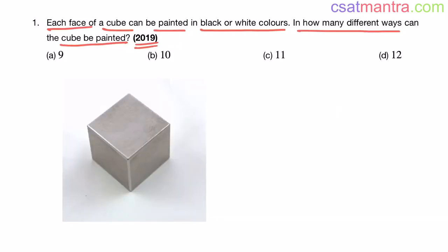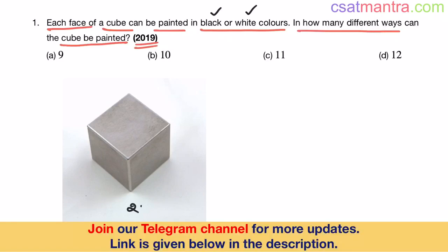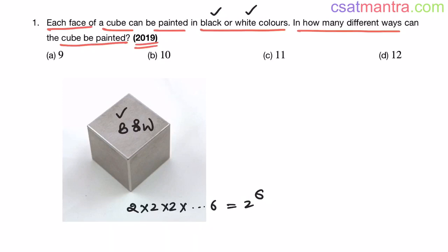Very interesting problem. Each face of a cube can be painted in black or white colors. In how many different ways can the cube be painted? This question is from the Permutation and Combination chapter, asked in 2019. It is the third question asked from this chapter that year. Here there is a tendency to make a mistake. We have six faces, and on each face you have two choices — black or white. So 2 × 2 × 2 × ... up to 6 times, that is 2 power 6.